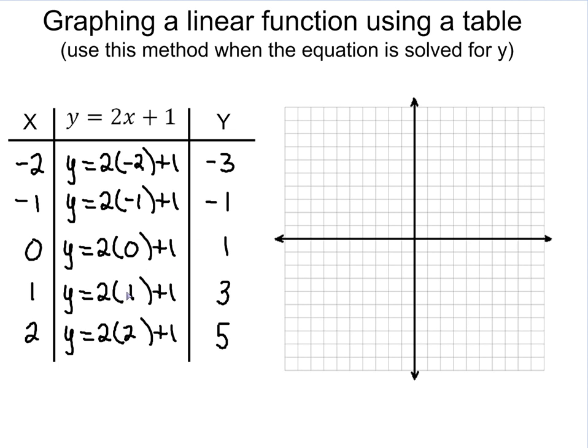You see 2 times 0 plus 1, 2 times 1 plus 1, 2 times 2 plus 1, which gives you 1, 3, and 5, respectively.